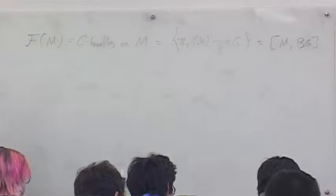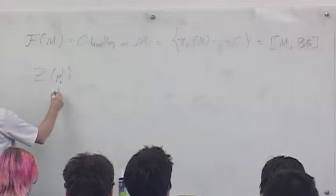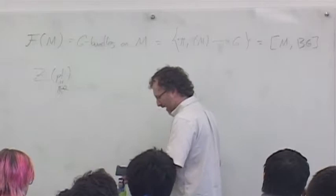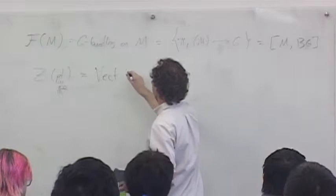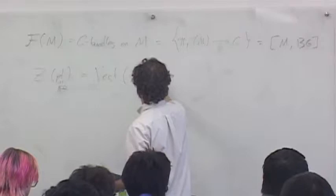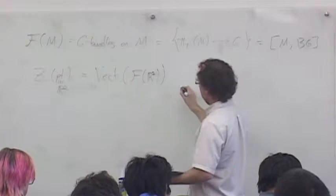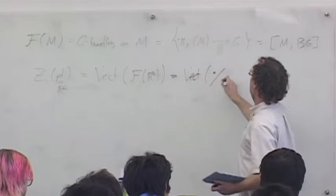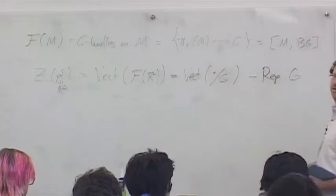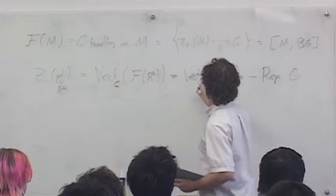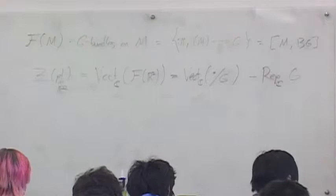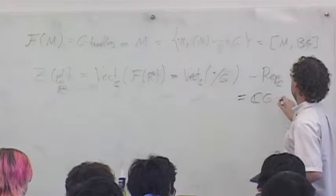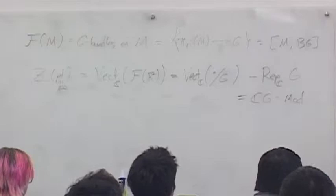So now I need to define my field theory. Z of a point — thinking of this as Z of R² — it's a two-dimensional field theory, so I want to assign a category. The ansatz we took last time was we take vector bundles on the space of fields on a point. There's only one G-bundle on a point, but it has G-automorphisms, which is the same as representations of the group G. So that's my category: representations of group G. We said last time you might prefer to think of an algebra — this is the same as modules for the group algebra of G.